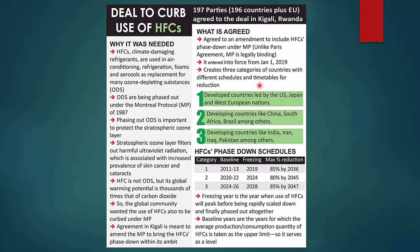Basically, 2036 tak 85%, 2045 tak 80%, and 2047 tak 85% HFC usage ko kya kiya jayega — kam kiya jayega. Freezing year is the year when use of HFCs will peak before being rapidly scaled down and finally phased out altogether. Baseline years are the years for which the average production or consumption quantity of HFCs is taken as the upper limit, serving as a level.